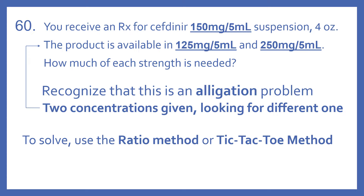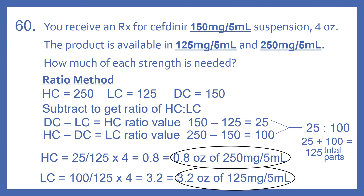To solve, we can use the ratio method or the tic-tac-toe method. We'll look at both. First, the ratio method. With the ratio method, we're going to identify the high concentration, the low concentration, and the desired concentration. The high concentration is 250, the low concentration is 125, and the desired concentration is 150.